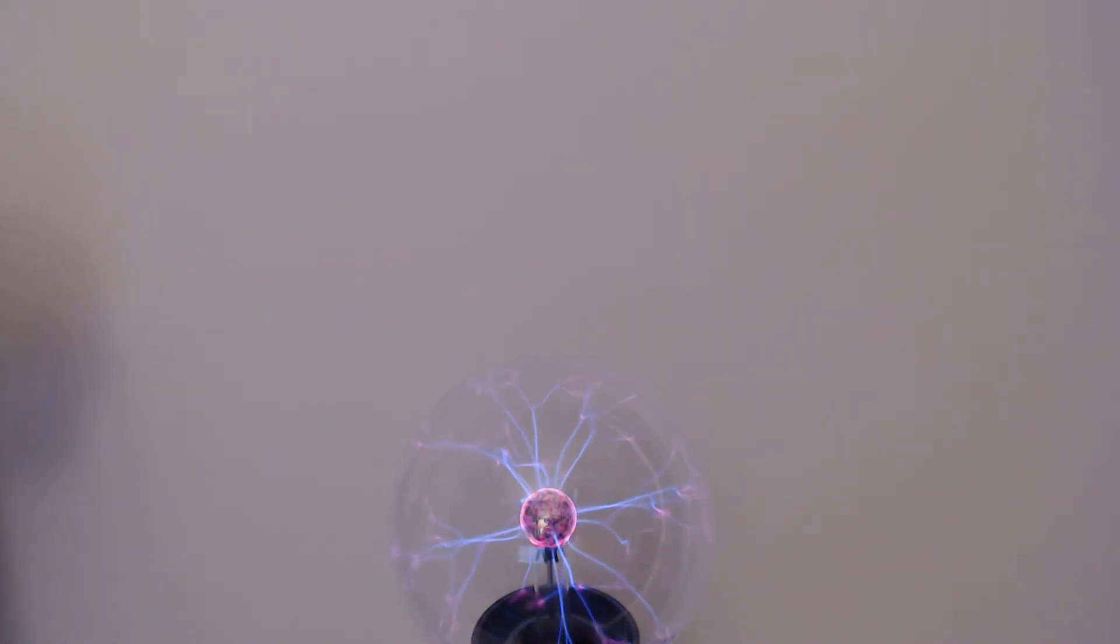As many of you know, this device is known as a plasma globe. And you've probably been fascinated by all those wonderful colored streamers that pass from the ball in the middle to the glass globe on the outside.